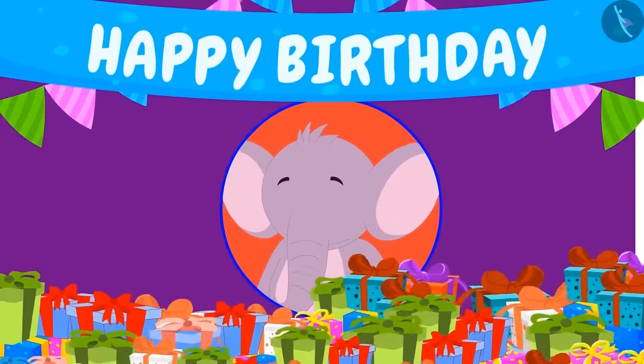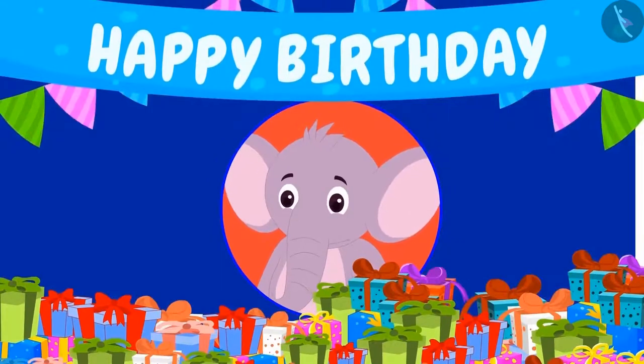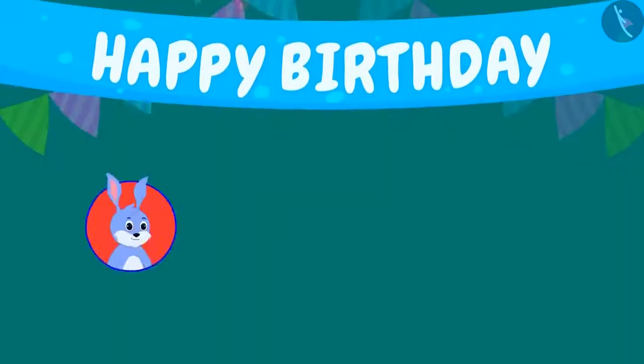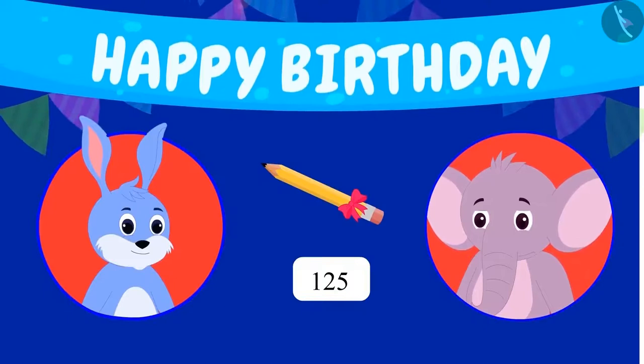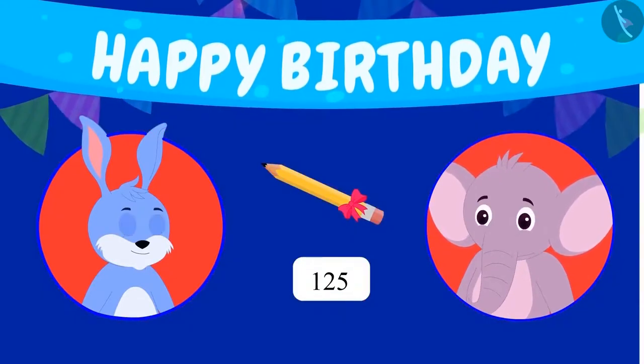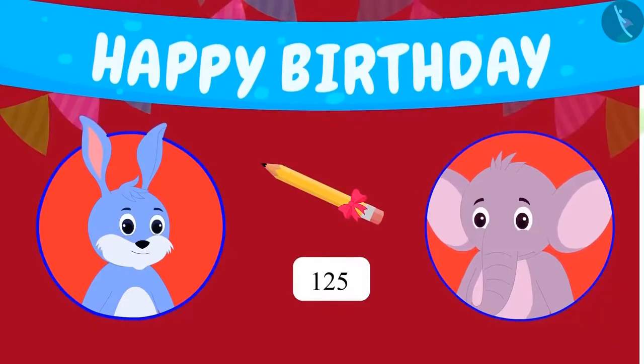Appu received a lot of gifts at his party. Let's see what gifts he received. Bunny has gifted Appu 125 pencils. But because Bunny makes a mistake while counting fast, Appu is counting them again.